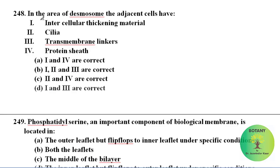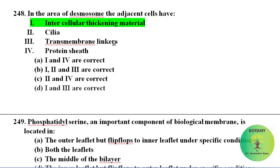In the adjacent cell, there is intercellular thickening material. Cilia are not present in adjacent cells. Desmosomes have transmembrane linkers — yes, these transmembrane linkers are also present.